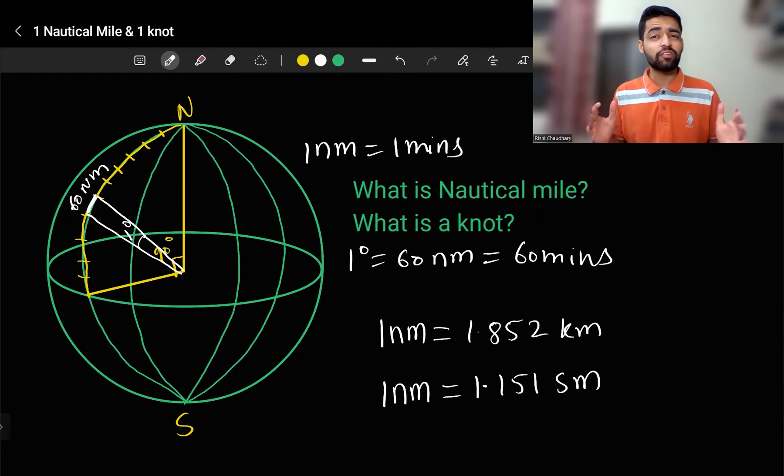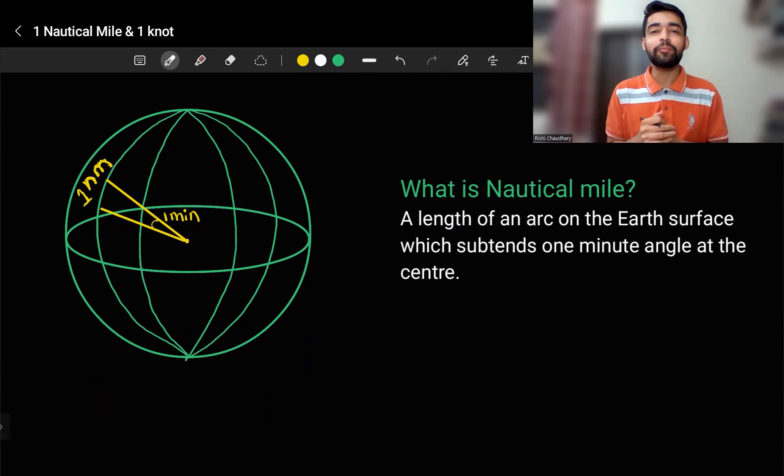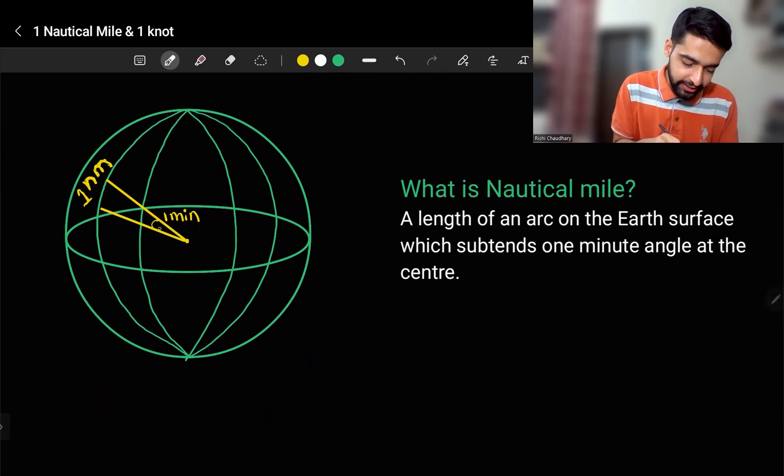Now that we have learned all the basics of the nautical mile, we can absorb the definition of nautical mile. Nautical mile is a length of an arc on the Earth surface which subtends 1 minute angle at the center. As you can see, I have made this time not 1 degree angle but 1 minute angle which subtends 1 nautical mile at the center.